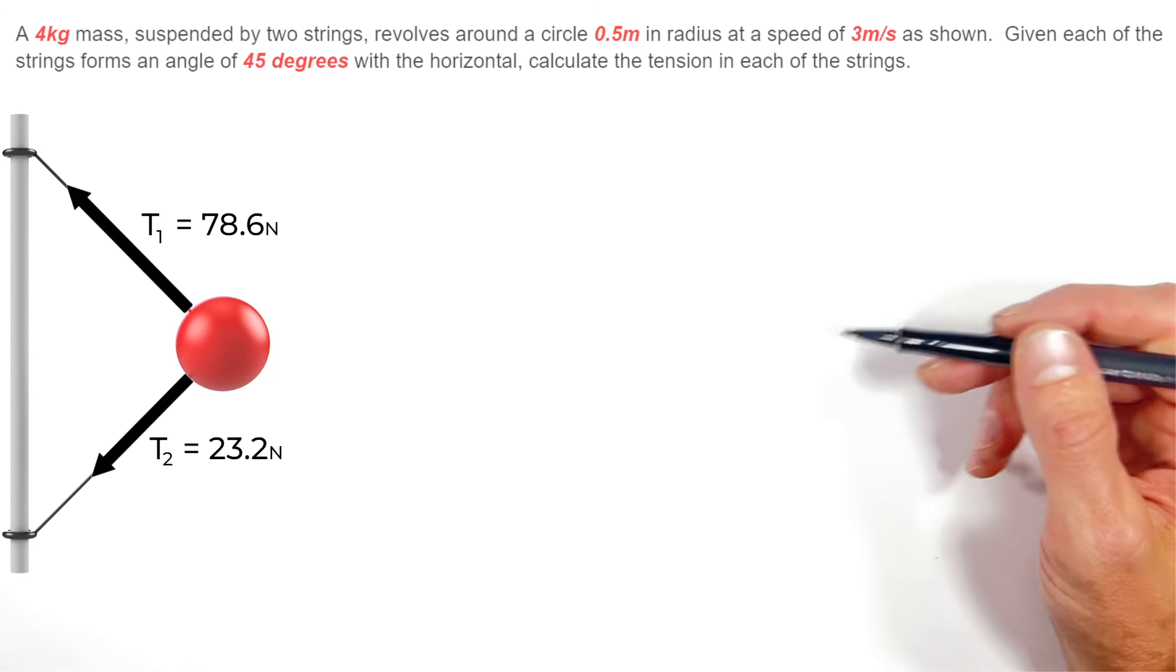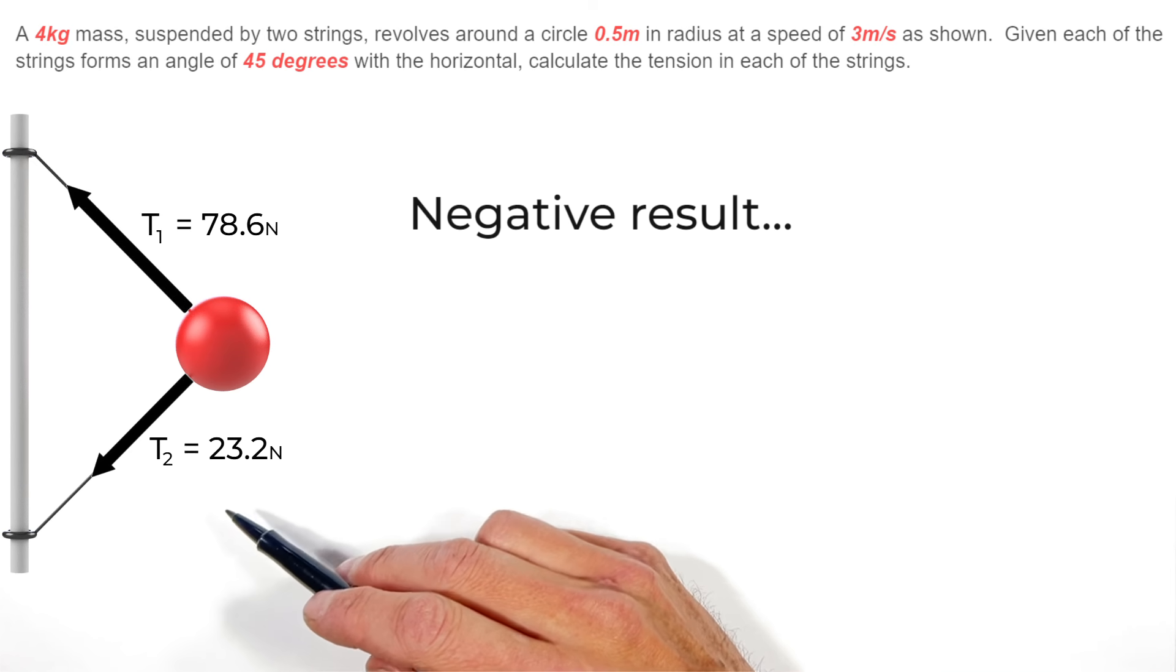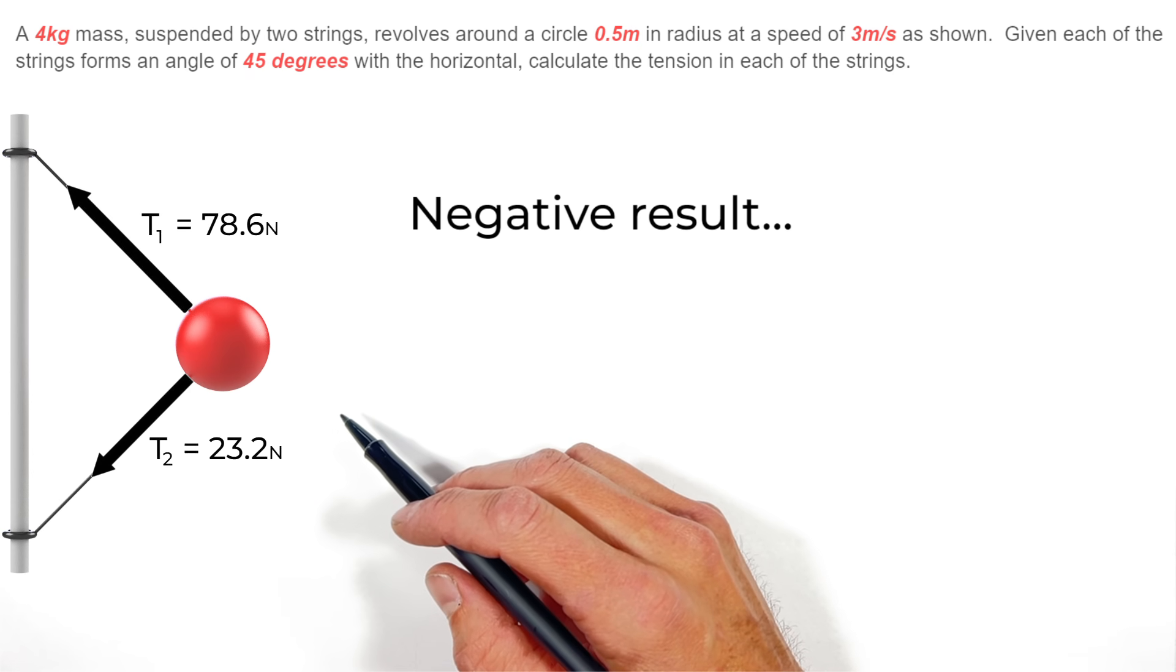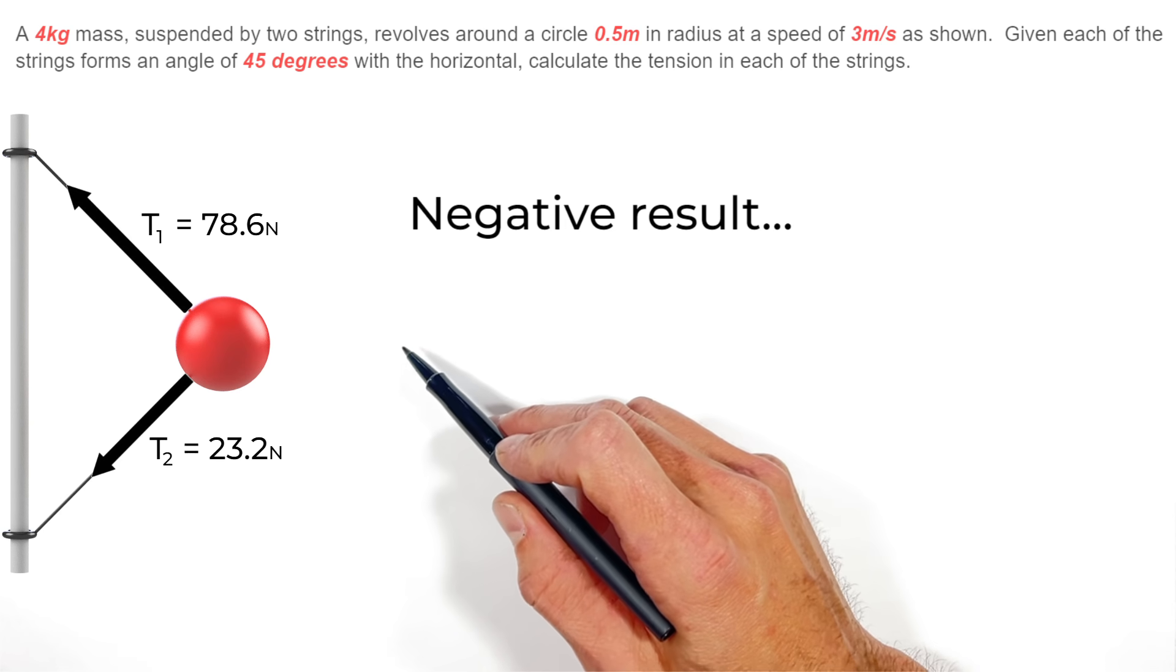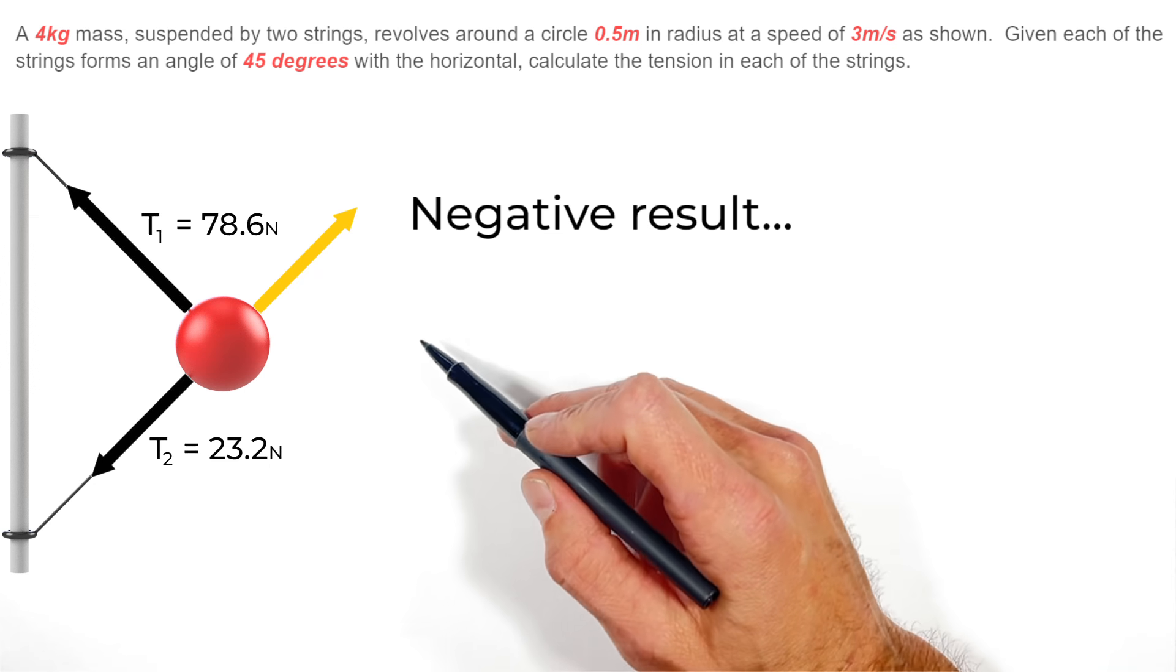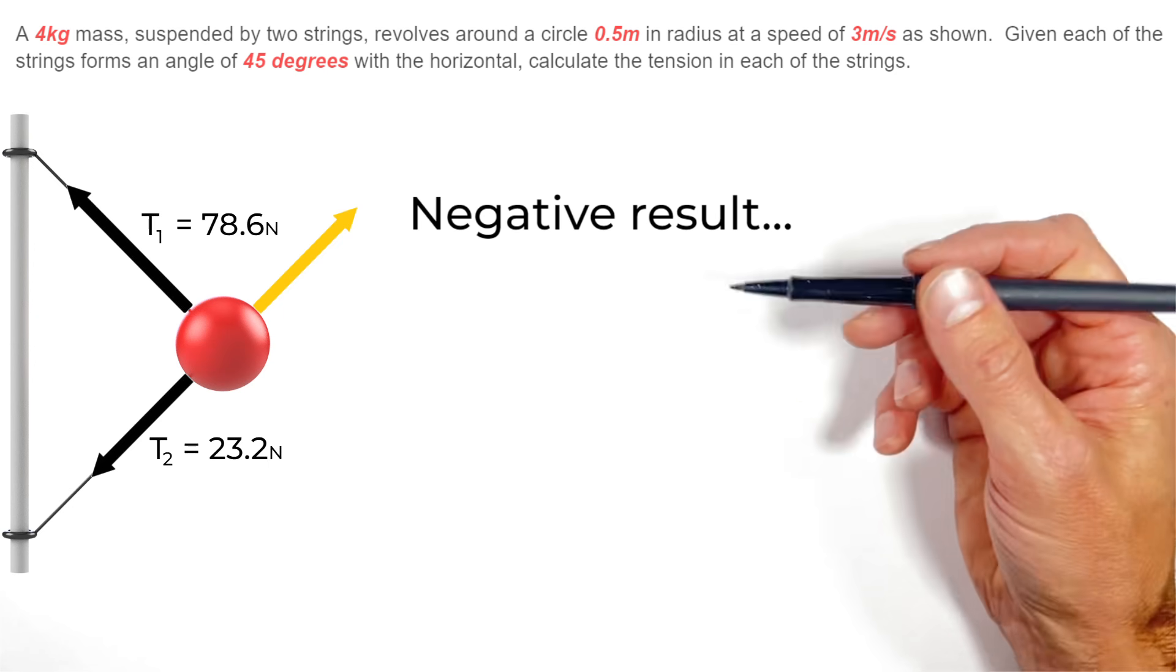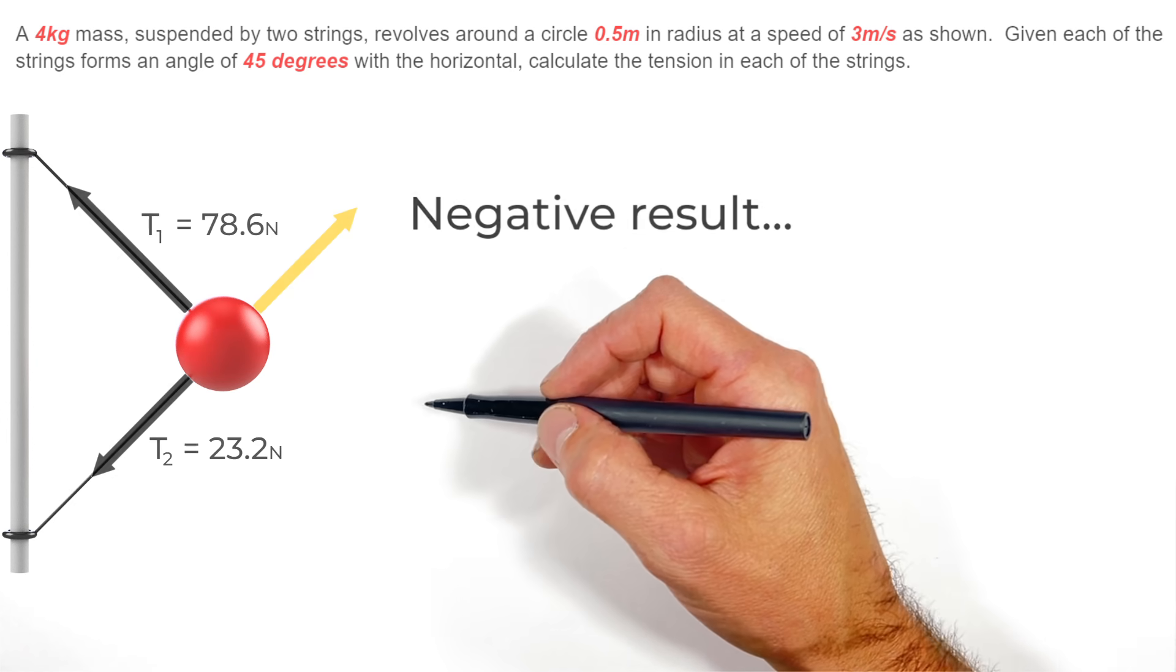Another little interesting quirk about this problem is that if you work out the problem and you find that you get a negative result for this tension 2 right here, it doesn't necessarily mean that you did something wrong in your calculations. What it means is that this string right here actually has to be pushing on the ball upward and to the right in order to keep the ball suspended at this position here. And of course that wouldn't work with a string because a string can only pull, but it might be a situation where we had to replace this lower string with a rod.